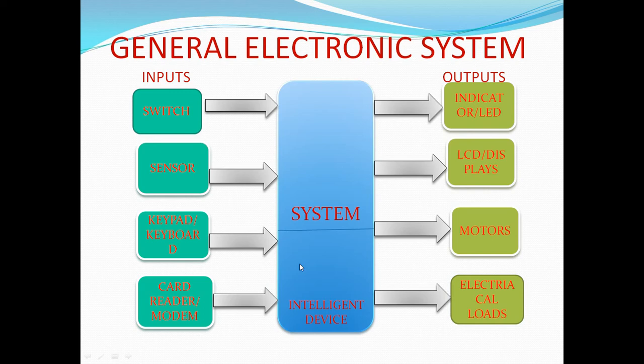Every system contains one intelligent device inside. A common man uses at least 10 electronic systems for daily requirements. The system is constructed with different input combinations — such as switches, buttons, sensors, keypads, keyboards, card readers, or modems — and output combinations like displays, indicators, motors, electrical loads, modems, or audio and video devices.